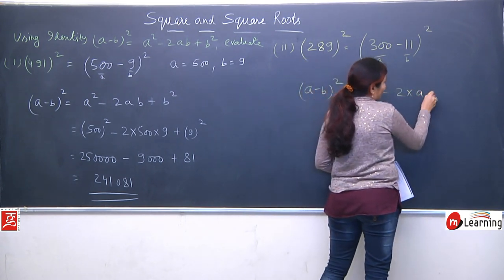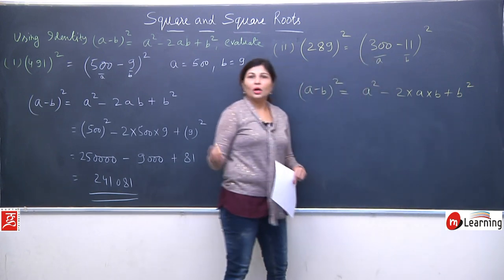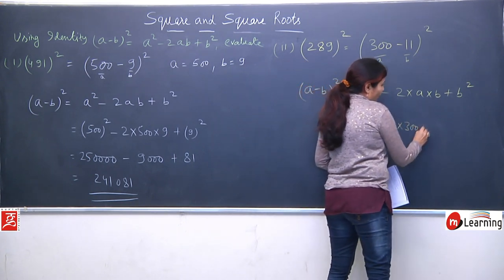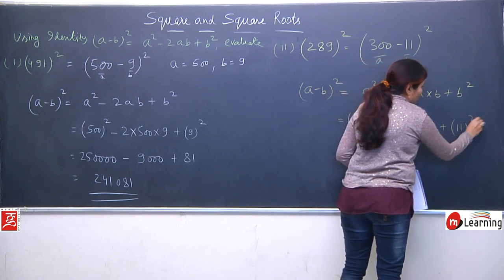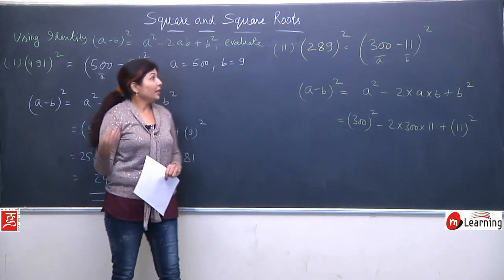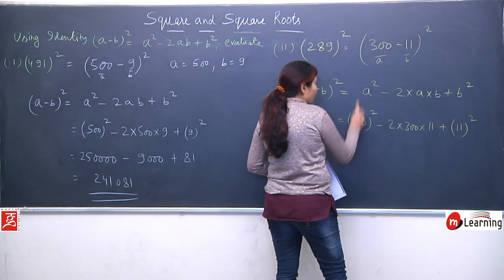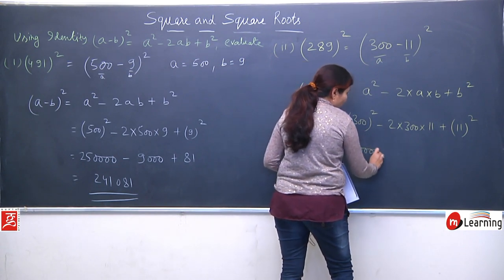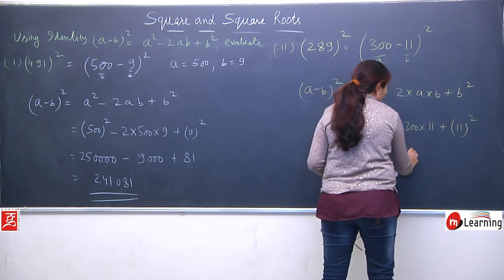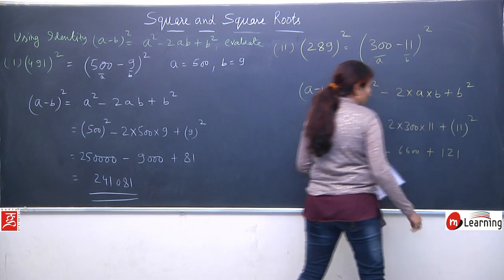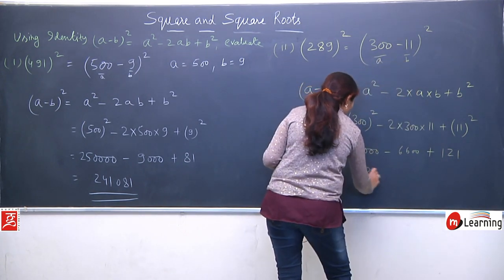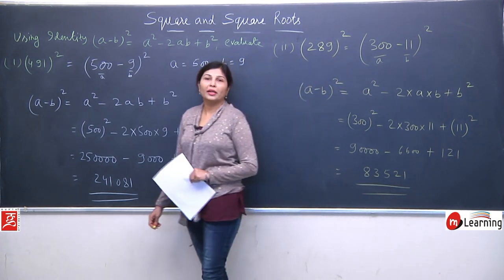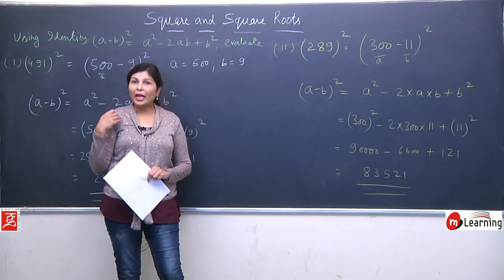Now applying (a-b)² identity: a² - 2ab + b². We put the values — 300 whole square minus 2×300×11, plus 11 whole square. Note that 11 ka square nikalna is easier compared to 89 ka square. Now 3 square is 9, we have 2 zeros so they get doubled to give 4 zeros — 300² = 90000. Minus 2×300×11 gives 6600. Plus 11 square = 121. After solving, we get 83521. Kitna easy ho gaya agar hamen identities yaad hain — we can easily find the square of any number.